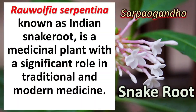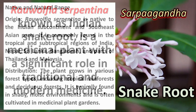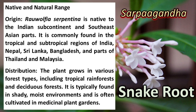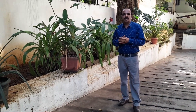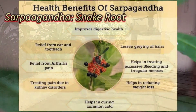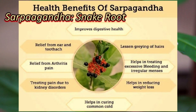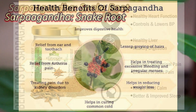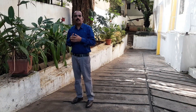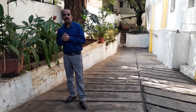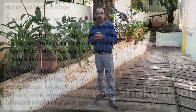Rauwolfia serpentina belongs to the family Apocynaceae. It is a very well-known plant in Ayurveda because of its therapeutic properties. Traditionally, it is used in Ayurvedic medicine and also in other indigenous practices. It has gained recognition for its role in managing hypertension and various other mental disorders.